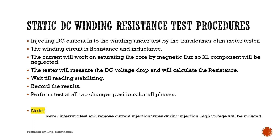Now we will discuss static DC winding resistance test procedures. DC current is injected into the winding under test by the transformer ohmmeter tester. As we know, the winding circuit is resistance and inductance. The DC current will work on saturating the core by magnetic flux, so the XL component will be neglected. The tester will measure the DC voltage drop and calculate the resistance. Wait until the reading stabilizes and record the results.